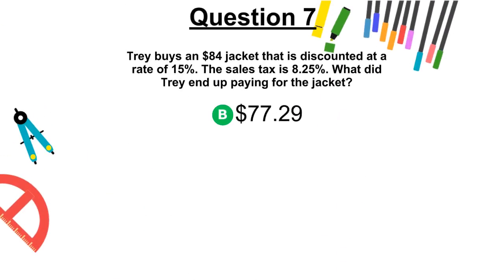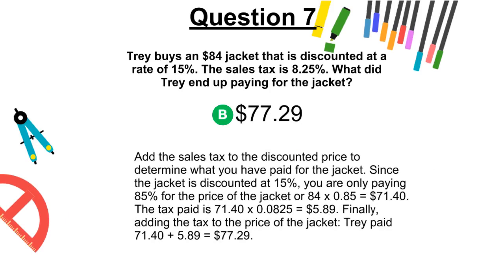The correct answer is B, $77.29. Add the sales tax to the discounted price to determine what you have paid for the jacket. Since the jacket is discounted at 15%, you are only paying 85% for the price of the jacket, or 84 × 0.85, which equals $71.40. The tax paid is 71.40 × 0.0825, which equals $5.89. Finally, adding the tax to the price of the jacket, Trey paid $71.40 + $5.89, which equals $77.29.